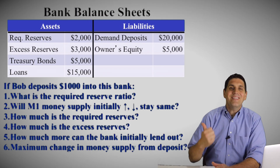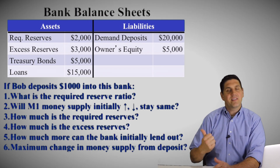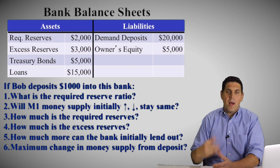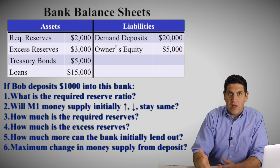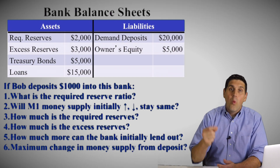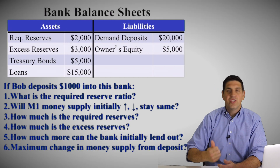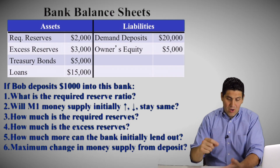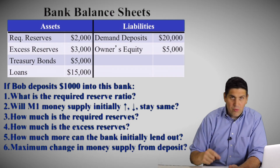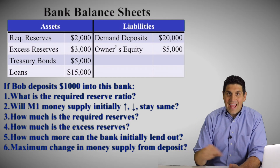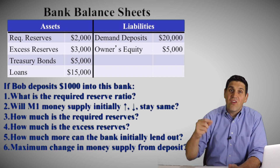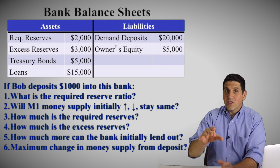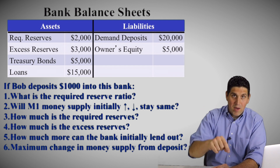Let's say Bob deposits $1,000 into this bank — some random guy shows up and puts $1,000 in the bank. What's going to happen to each one of these? I want you to answer these questions — pause the video, write down one through five, answer these questions, see if you can figure it out. Good luck. Okay, I'm going to go over the answers. If you need more time, go ahead and pause it.